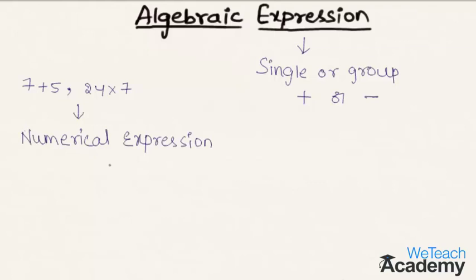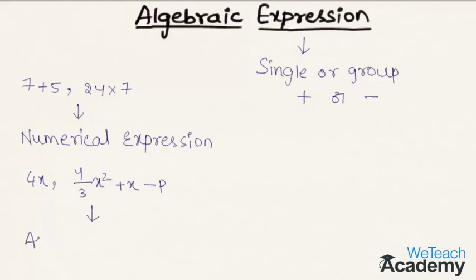Similarly, let us consider another example. We have two expressions: 4x, and the second expression is 4 by 3 x square plus x minus p. The expression containing at least one algebraic term, that is a variable term, we call this expression as an algebraic expression.